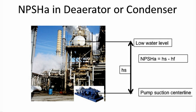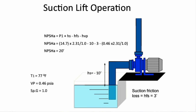Now let's look at a suction lift application. This is common when you're dewatering pits. The pit is open, so the suction pressure is atmospheric. From this, we must subtract the height of the lift — 10 feet — subtract the friction loss, which we calculated as 3 feet, and subtract the vapor pressure, and you have an NPSH of 20 feet.